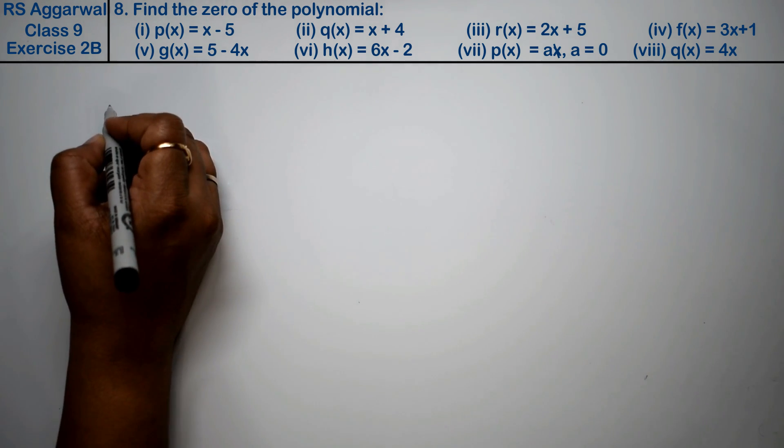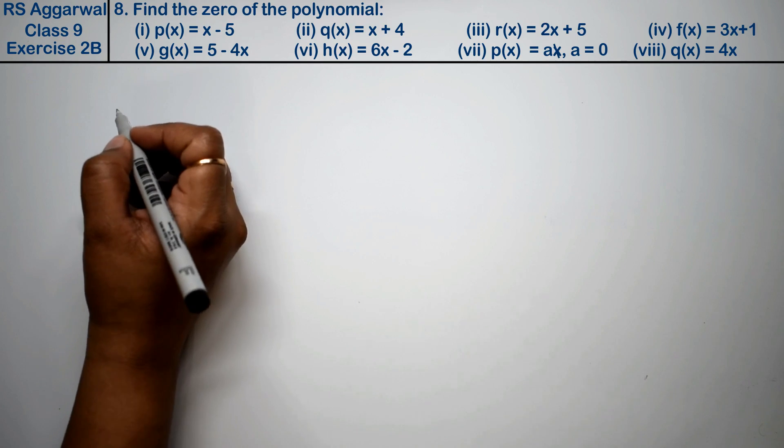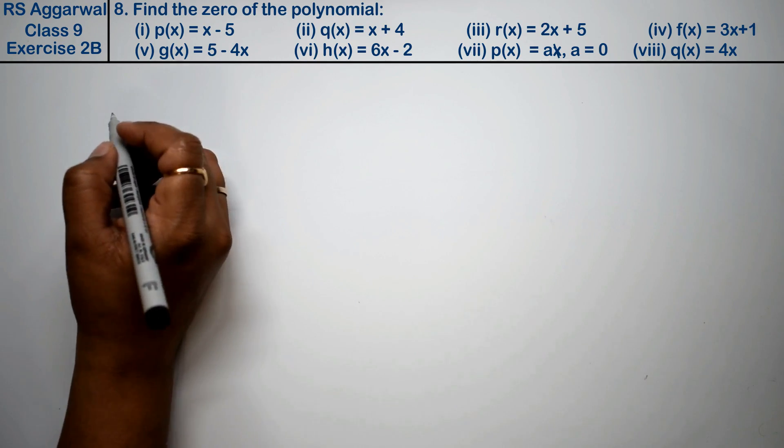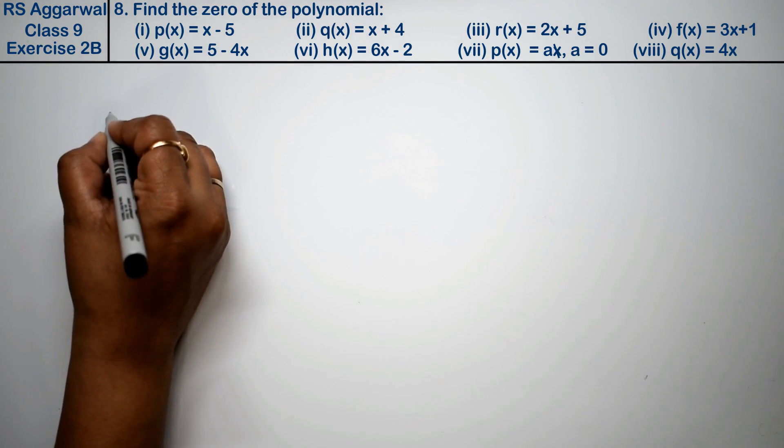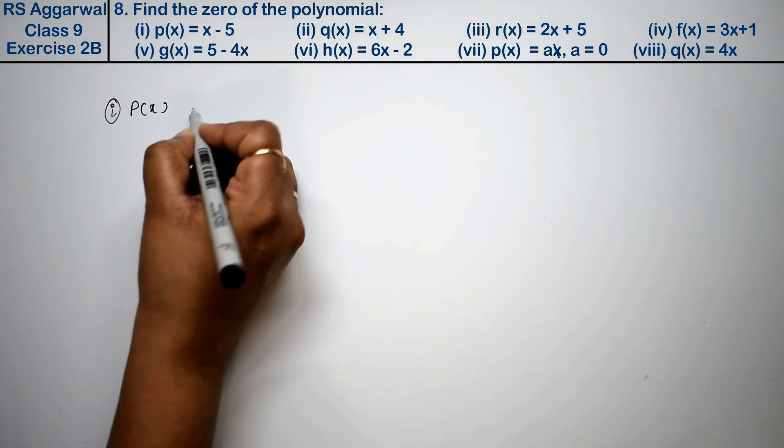Let's do question number 8 of exercise 2B. The question is about polynomials - find the zeros of the polynomials. First part is p(x) equals to x minus 5.